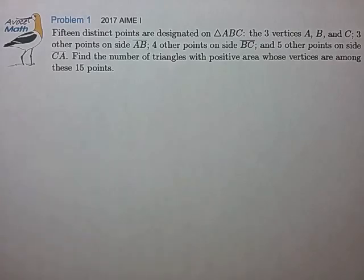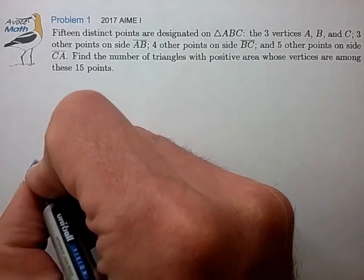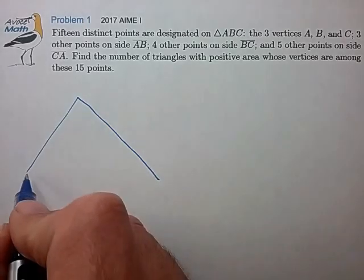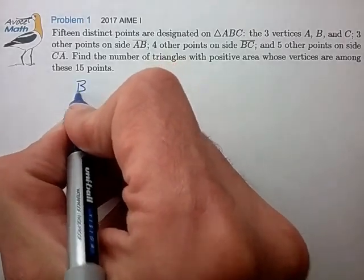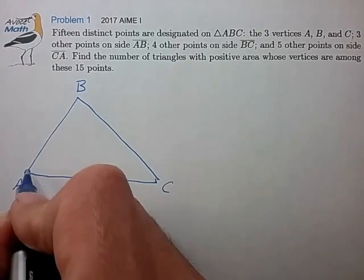Okay, let me draw this out and see if I understand the question. Looks like we have a triangle ABC, vertices in the corners.